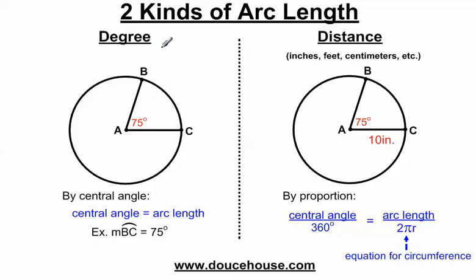The degree one is very easy to do. If you know what the central angle is — and when I say central angle, the vertex of the angle is actually the center of the circle — then you can find the arc length. We say the measure of arc BC, going from B to C, is going to equal whatever the central angle is. So since the central angle is 75 degrees, then the measure of arc BC is 75 degrees.